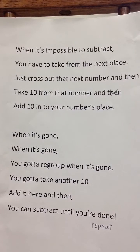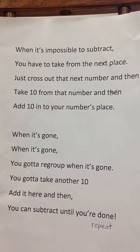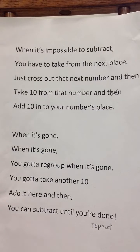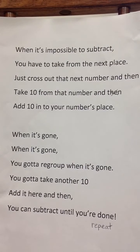When it's impossible to subtract, you have to take from the next place. Just cross out that next number and then take 10 from that number and add 10 into your number's place. When it's gone, when it's gone, you gotta regroup. When it's gone, you gotta take another 10, add it here, and then you can subtract.